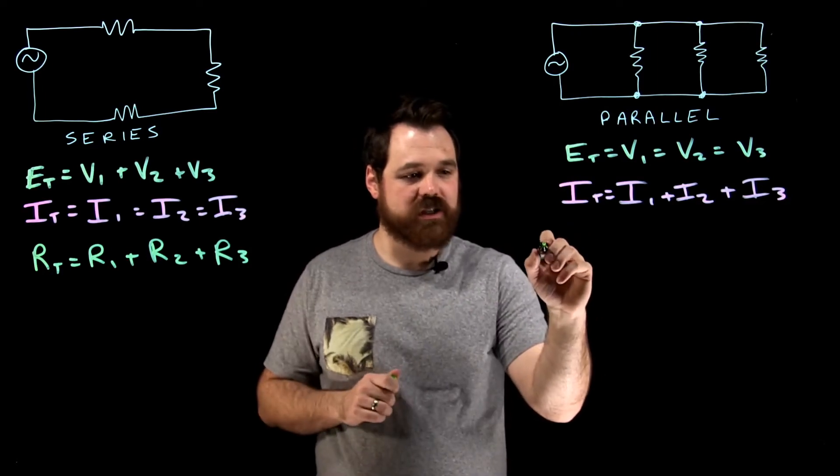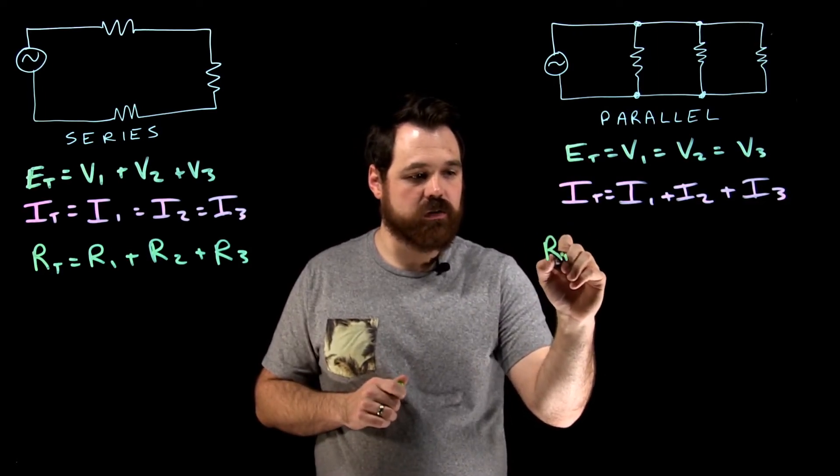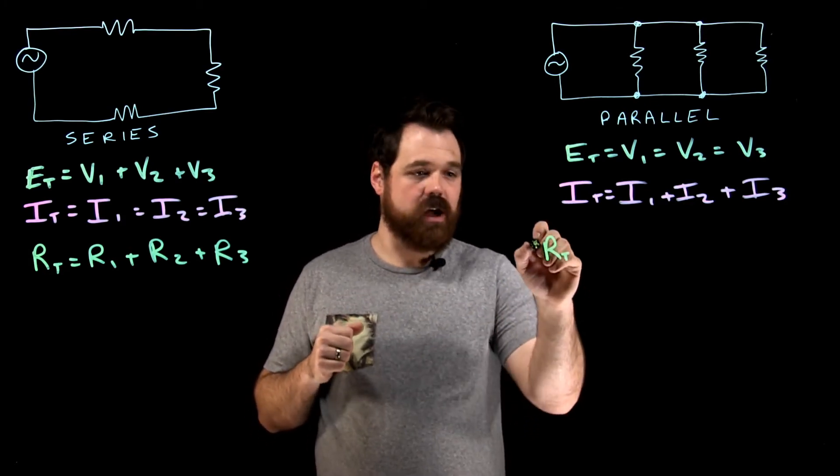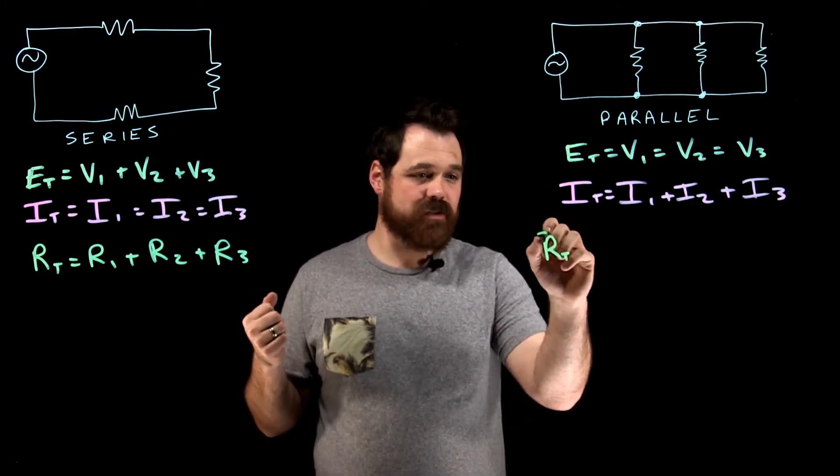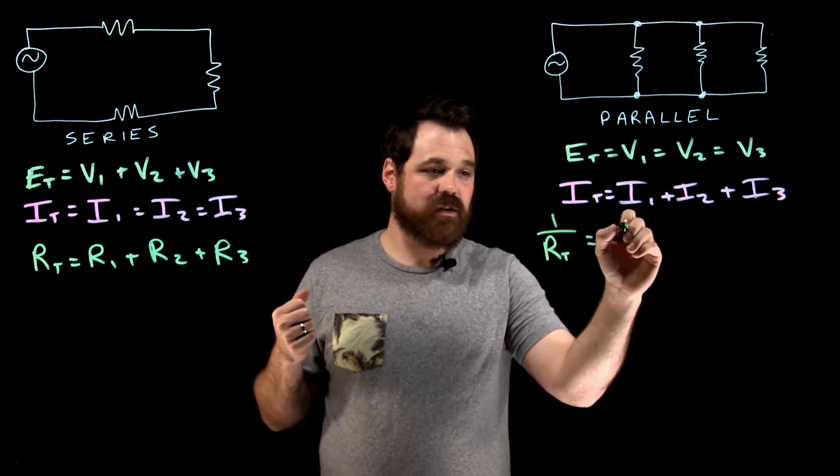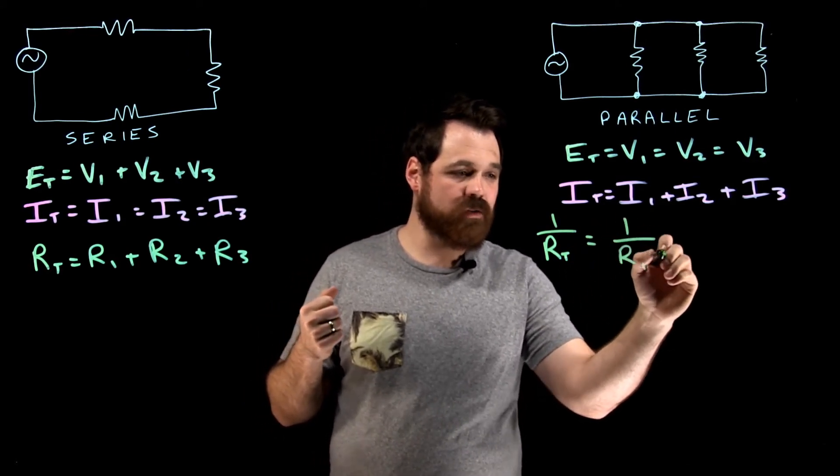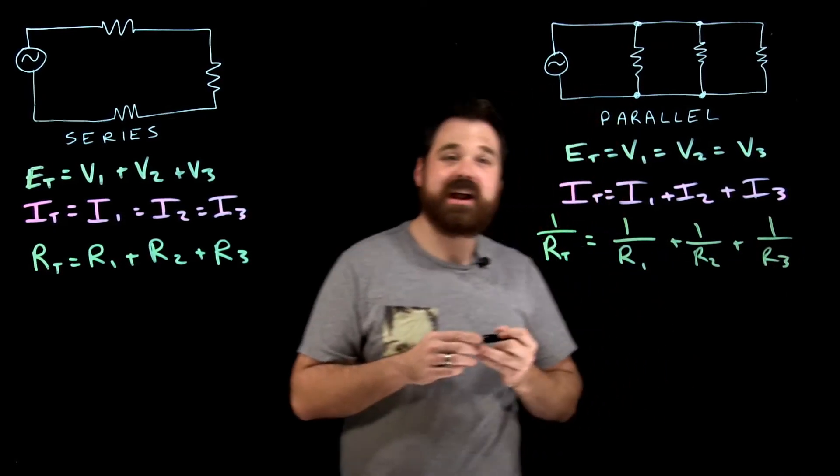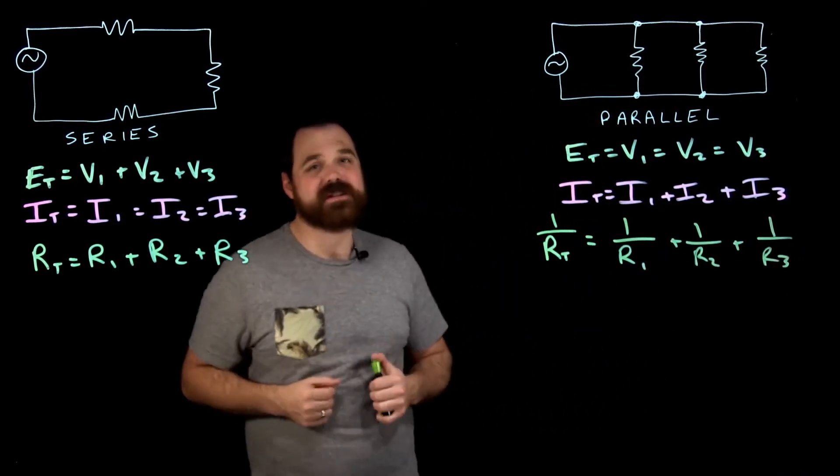What we see is R total. There are many different ways to write this. I'm going to write it out one way: one over RT equals one over R1 plus one over R2 plus one over R3. They add up inversely.